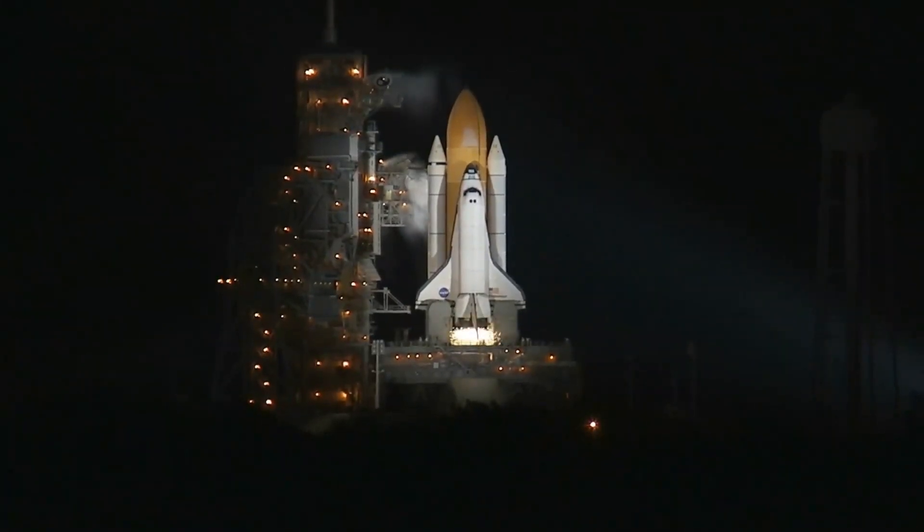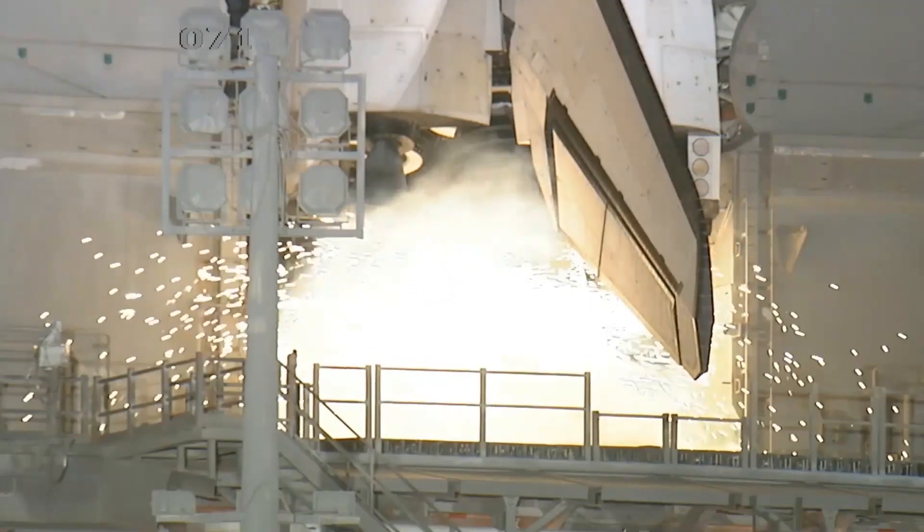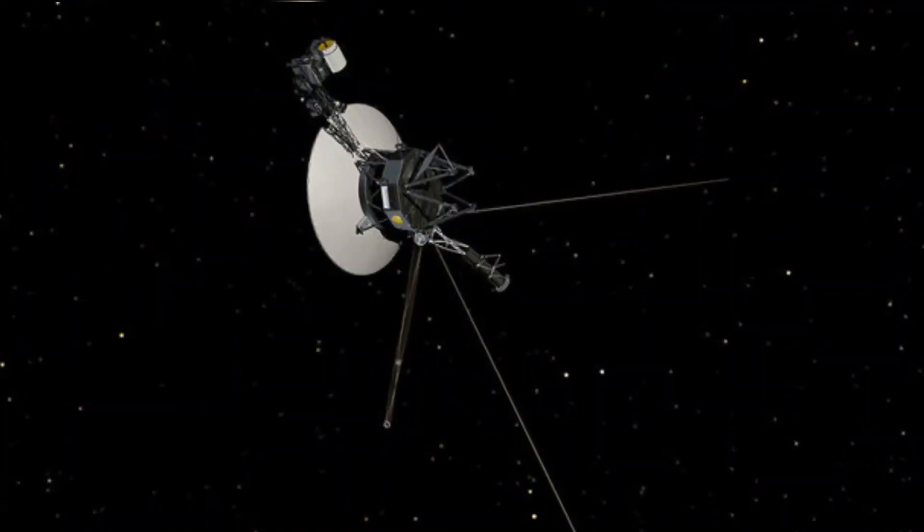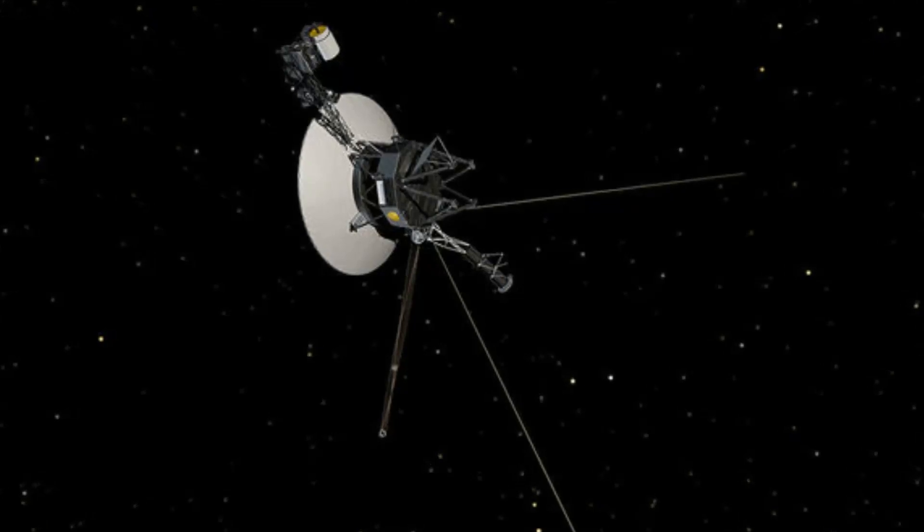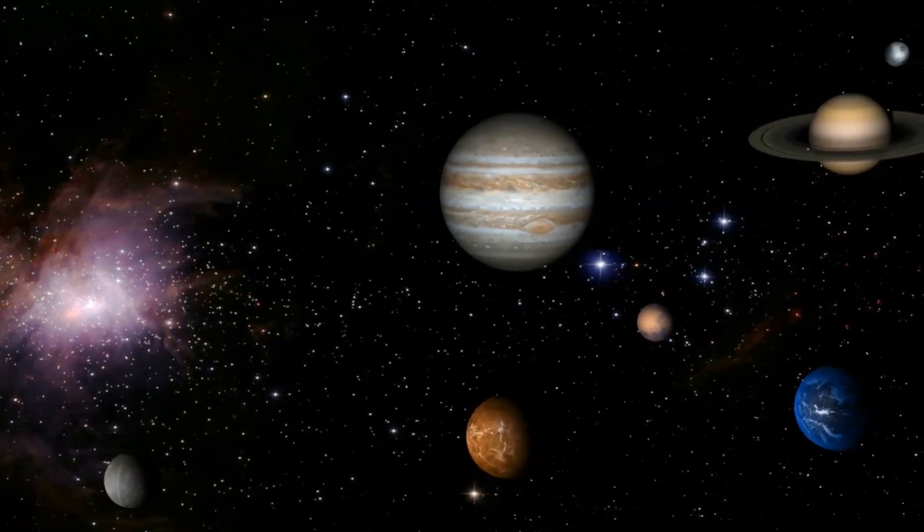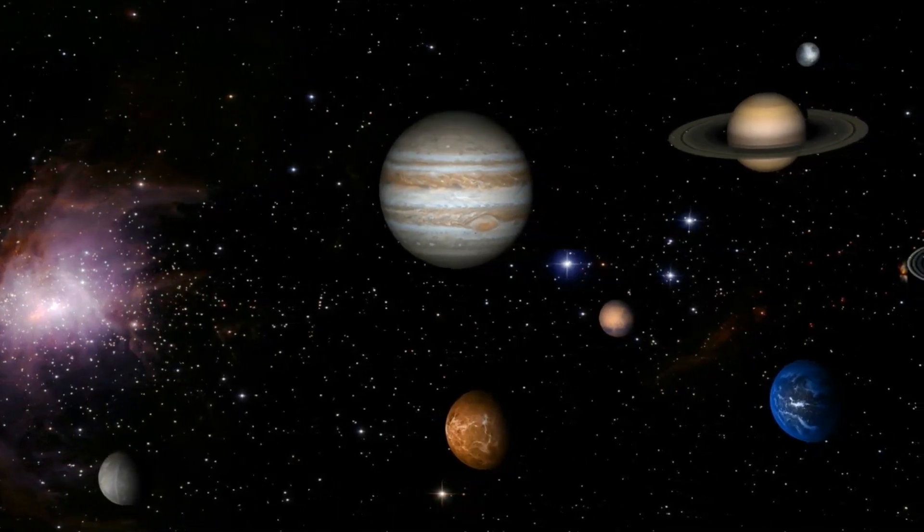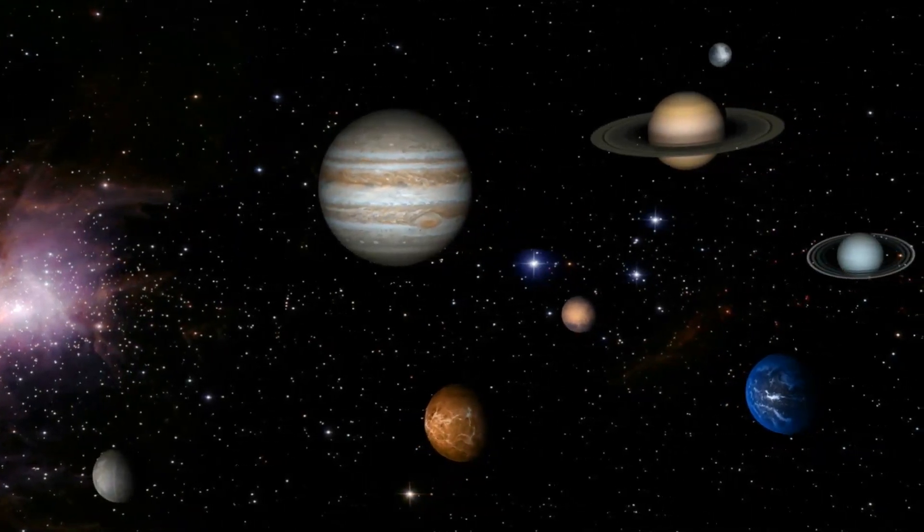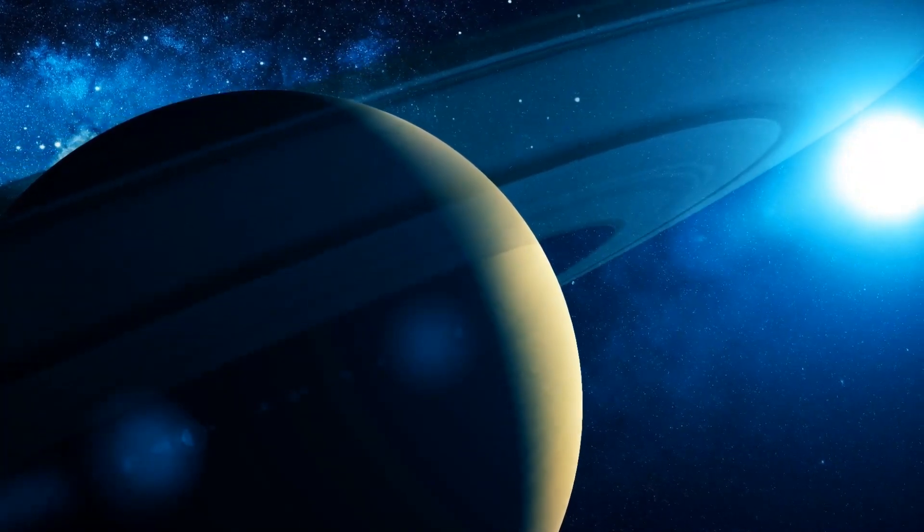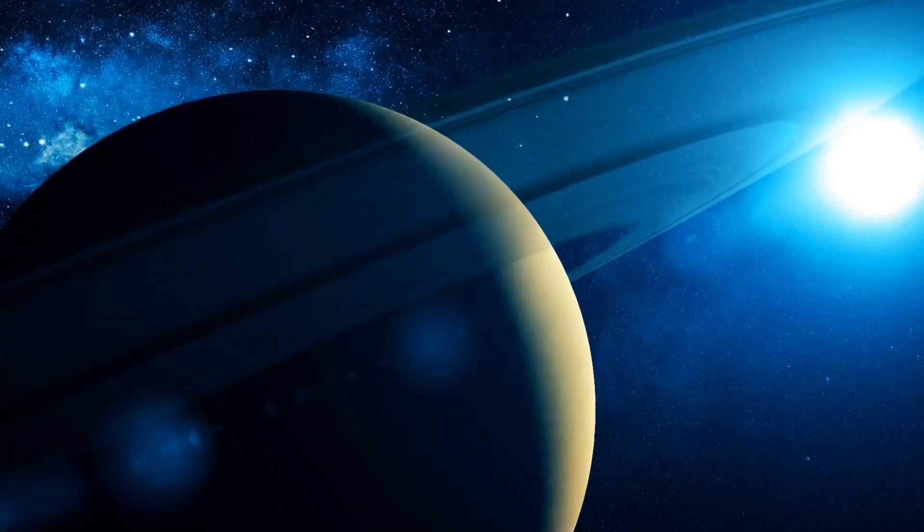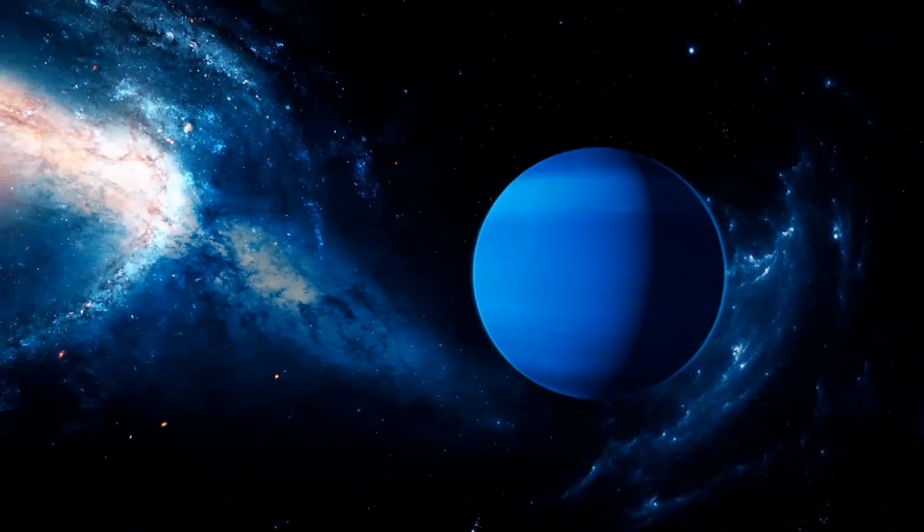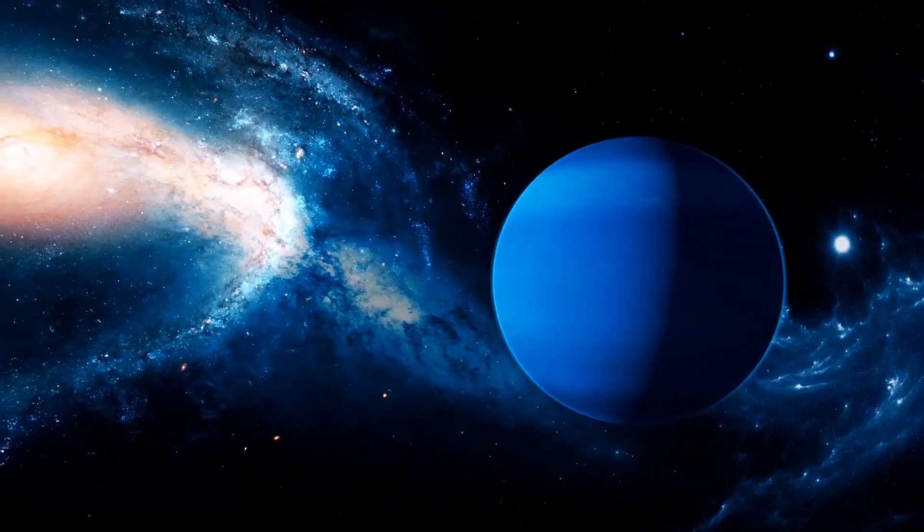The Voyager program is an American scientific program developed by NASA that launched in 1977. The mission consists of two robotic space probes, Voyager 1 and Voyager 2. The scope of the mission was to study the outer part of the solar system and gain knowledge about the outer planets and their moons. At first, the mission was quite simple. Voyager 1 had to study the planetary systems of Jupiter and Saturn, and Voyager 2 had to study Uranus and Neptune.